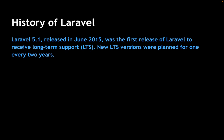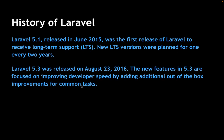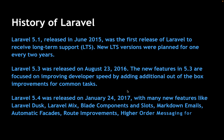Before Laravel 6, many minor versions were released. Laravel 5.1, released in June 2015, was the first release to receive long-term support (LTS). Laravel 5.3 was released on August 23, 2016, focused on improving developer speed. Laravel 5.4, released on January 24, 2017, introduced features like Laravel Dusk, Laravel Mix, Blade components, slots, and Markdown — many of which we have used in our series.